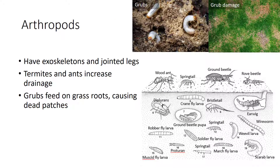Arthropods are animals that have exoskeletons and jointed legs, whereas non-arthropods have neither. Soil arthropods include termites, ants, weevil larvae, grubs, beetles, and a variety of other insects. An advantage of termites and ants is that they can increase drainage because of the pore spaces they produce in the soil. However, they both also produce large soil hills and mounds, which are unsightly and cause problems with mowing. Grubs cause major problems in turf because they feed on the roots of grass plants, resulting in dead patches in the lawn.